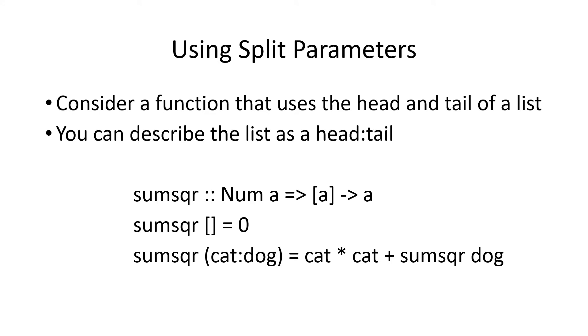Here's an example. We're doing the sum of the squares of a list of numbers. It takes a list of numbers and returns a number. As before, if the list is empty, it returns a zero. Otherwise, we've split the list into two values. The head, which we call cat, and the tail is dog. And then now all we have to do is square the cat, and then recursively call the function on dog, which is the tail of the string.